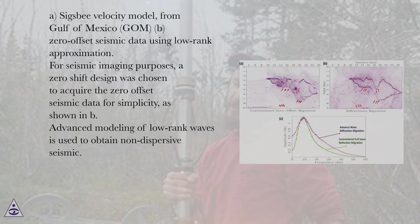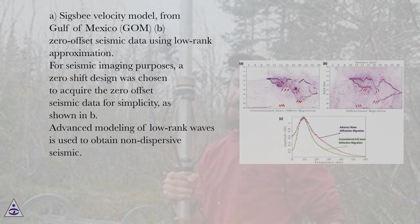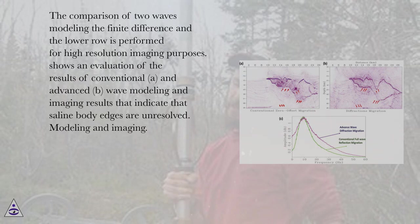The SIGSB velocity model from the Gulf of Mexico is shown. For seismic imaging purposes, a zero-shift design was chosen to acquire the zero-offset seismic data for simplicity. Advanced modeling of low-rank waves is used to obtain non-dispersive seismic. The comparison of two wave modeling approaches — finite difference and low-rank — is performed for high-resolution imaging purposes.